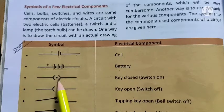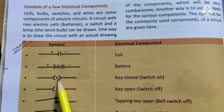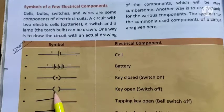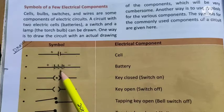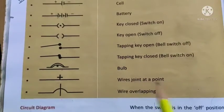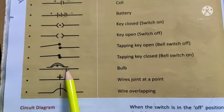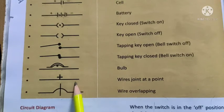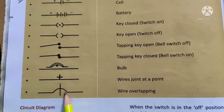When there is a dot shown in the switch symbol, it means the key is closed — the switch is on — and the bulb is glowing. When the switch is off, the bulb will not glow. These are the symbols to remember: cell symbol, battery symbol, switch on (tapping key closed), tapping key open. The bulb is represented with its own symbol. When two wires join at a point, we show a plus sign; when they overlap, one wire is drawn over the other.